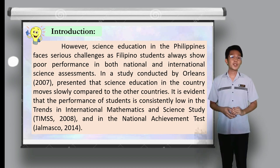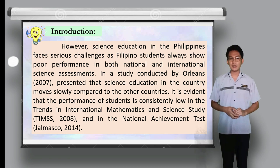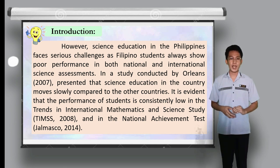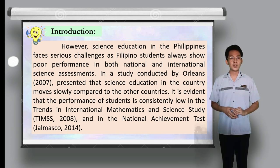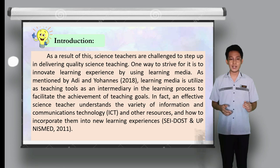However, science education in the Philippines faces serious challenges, as Filipino students always show poor performance in both national and international science assessments. In a study conducted by Orleans (2007), science education in the country moves slowly compared to other countries. It is evident that the performance of students is consistently low in the Trends in International Mathematics and Science Study (TIMSS) 2008, and in the National Achievement Test (2014).